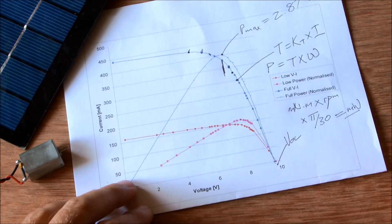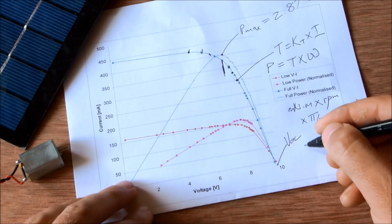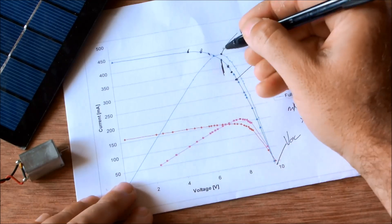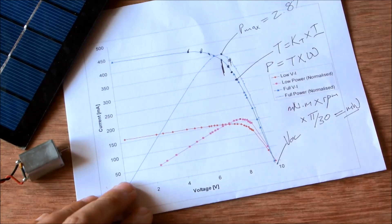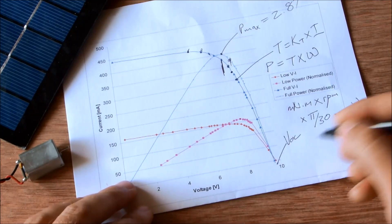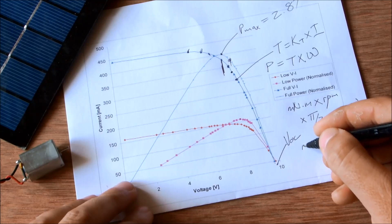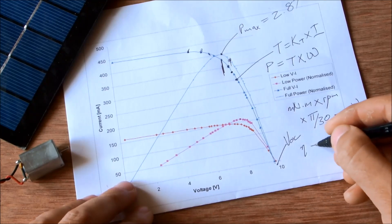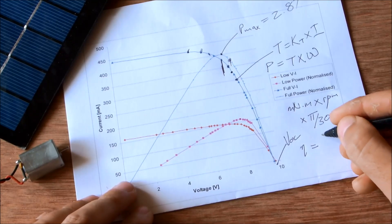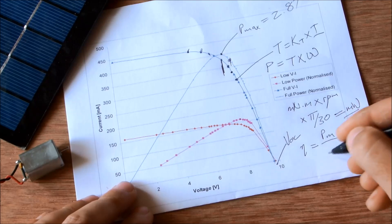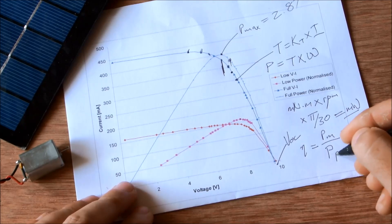Once I know the power output I can compare that to the power input because I also have that, the power input from the solar panel. And I can work out the motor efficiency as the motor power divided by the panel power.